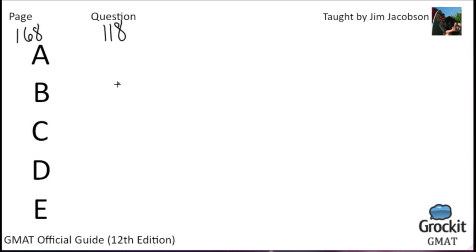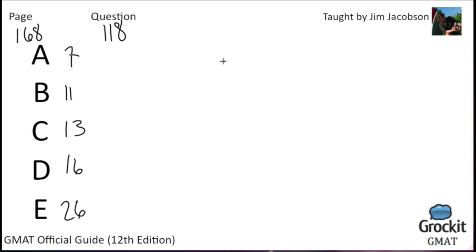We have some answer choices here: 7, 11, 13, 16, and 26. The ratio of the length to the width of a rectangular advertising display is approximately 3.3 to 2. If the width of the display is 8 meters, what is the approximate length of the display in meters? It is always good to double-check the units. Judging by the answers, they're all in the same ballpark. We can set this up as a simple equation: the ratio of the length to the width is 3.3 to 2.